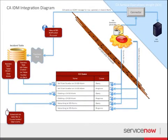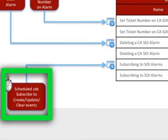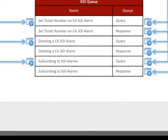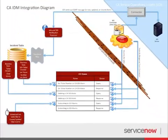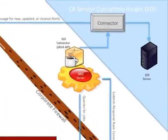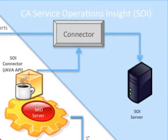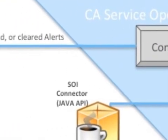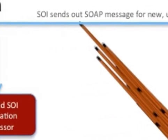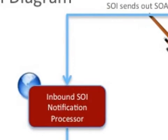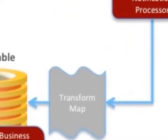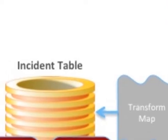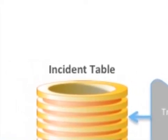In order to receive notifications from SOI on these alert creations or updates, ServiceNow must send a notification subscription request to SOI on a periodic basis, stating that the instance would like to receive SOAP message posts on alert creation, update, and deletion. As alerts occur, are modified, or are cleared in the SOI system, SOI will send a SOAP message to an inbound SOI notification processor that exists in the integration. This processor will take that information and run it through a transform map that will transform the data and apply it to the appropriate record in the incident table, or create a new incident if necessary.